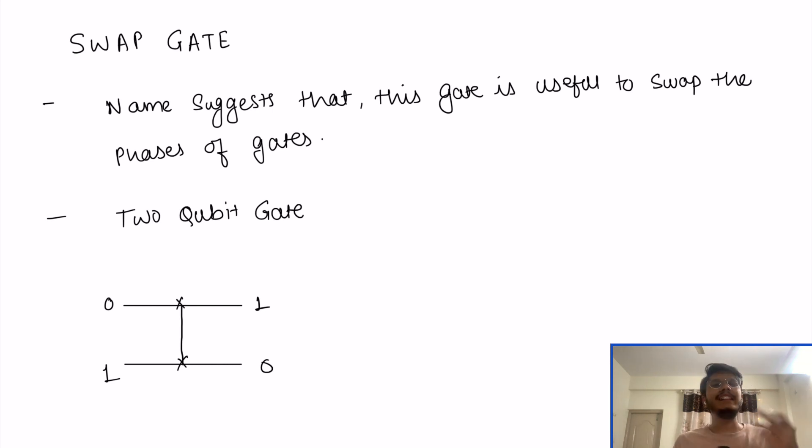Now, why this swap gate is useful? In normal classical computer, we use different variables to swap the current value to the other one and similar way, other way around, right?